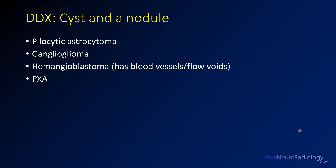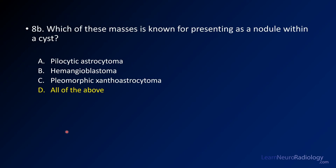Whenever you have a cyst with a nodule, you want to think about this differential: pilocytic astrocytoma, as in this case; ganglioglioma; hemangioblastoma — these occur in the posterior fossa but more commonly will have blood vessels or flow voids, so use that as your differentiating factor; or pleomorphic xanthoastrocytoma, PXA. All of the above can have a cyst and nodule appearance, so your answer is D.